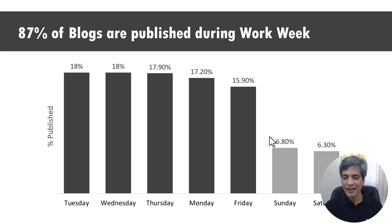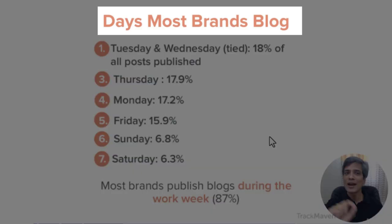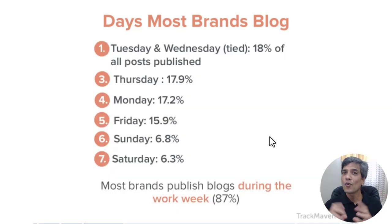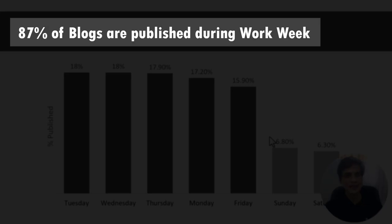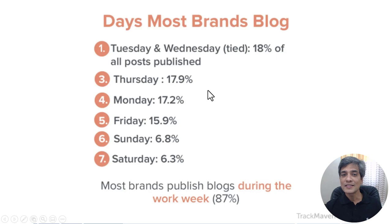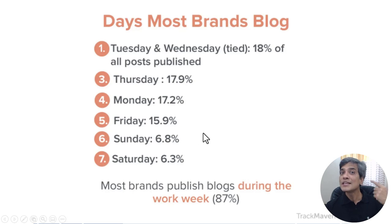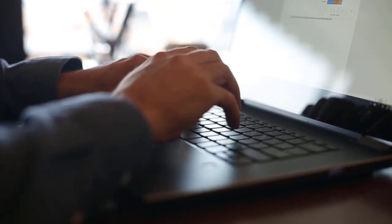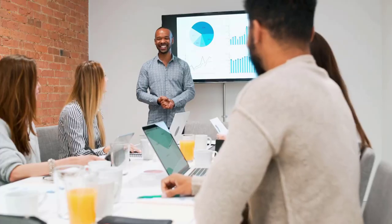Now let us compare this slide with the earlier slide. Take a look at the slide title here — it says 'Days Most Brands Blog.' Does it give you any idea of what the slide is about? Now take a look at this slide title: it says '87% of blogs are published during work week' — a simple and clear statement. In the original slide the numbers are lost in a lot of text. Your audience doesn't have the patience to sift through so much text, pick out the numbers, and visualize the relationship between them. As a presenter, it is your responsibility to process the information and present it in a way that your audience understands quickly.